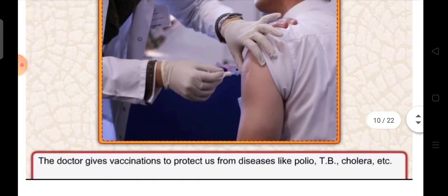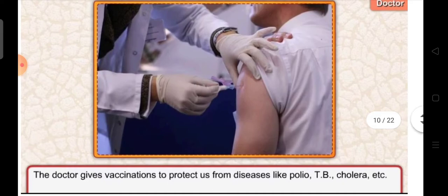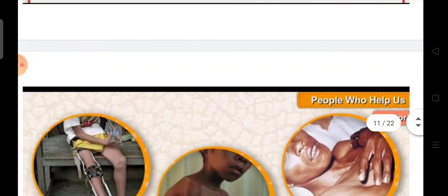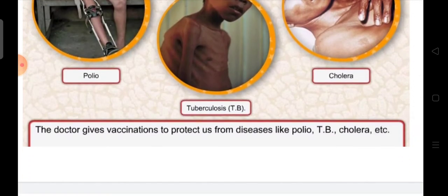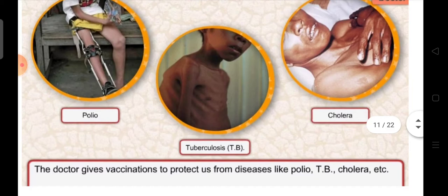The doctor gives vaccination to protect us from diseases like polio, TB, and cholera. The doctor gives us injections to protect us from these diseases. In the first picture you can see polio, in the second picture tuberculosis, and in the third picture you can see cholera. These are the diseases the doctor gives vaccination against.